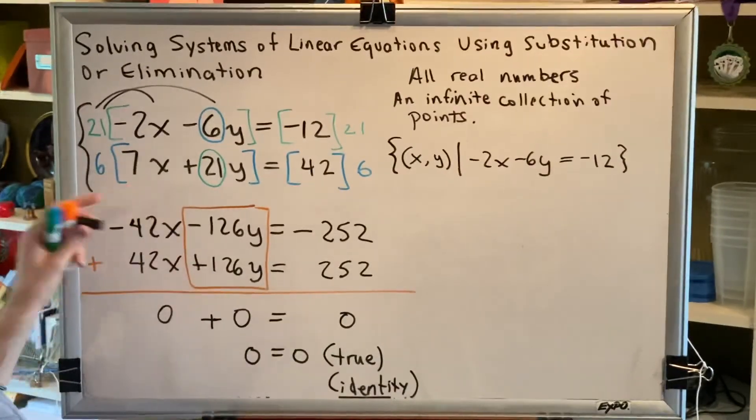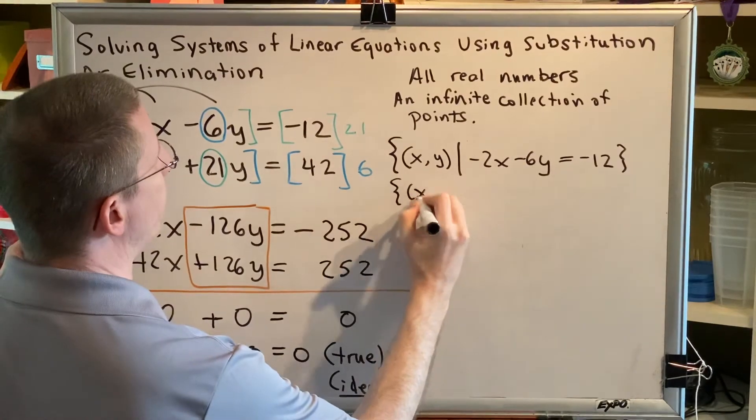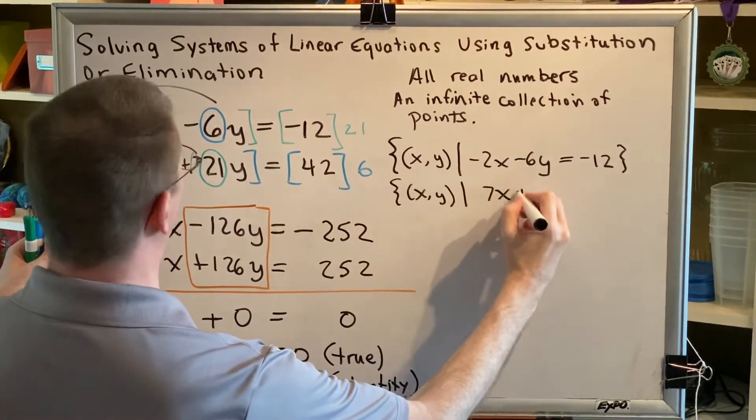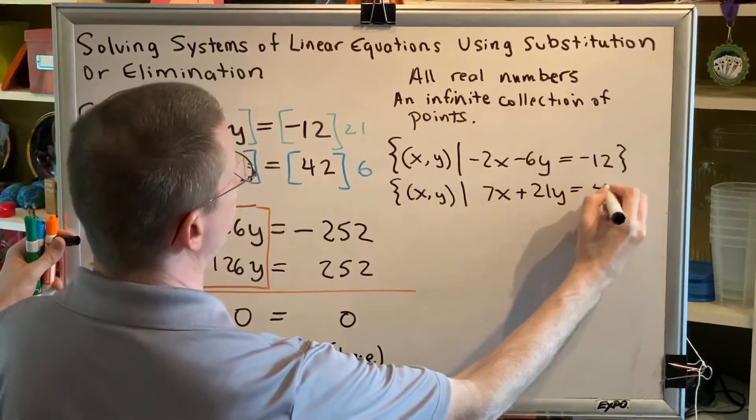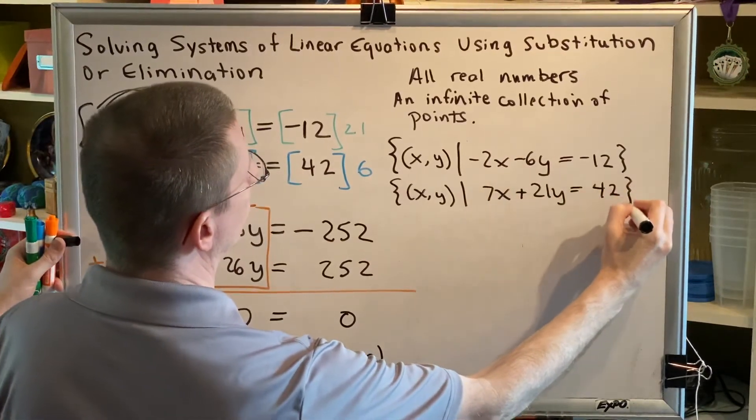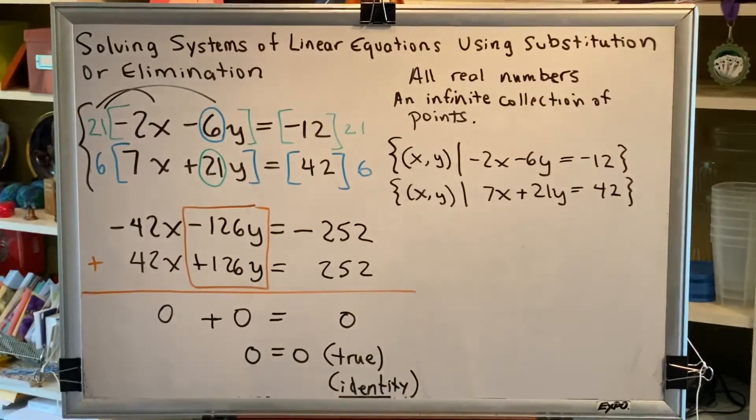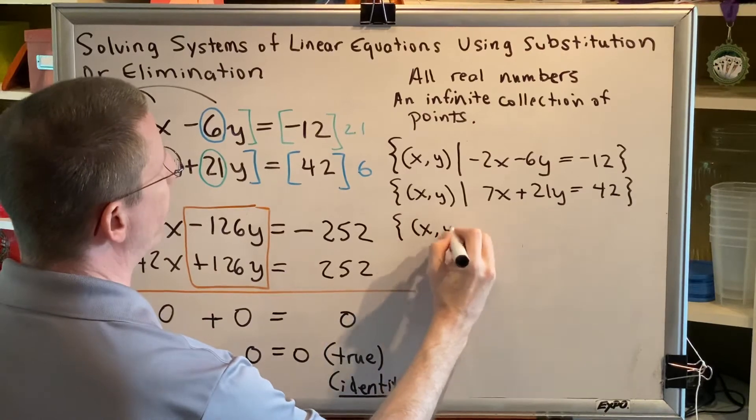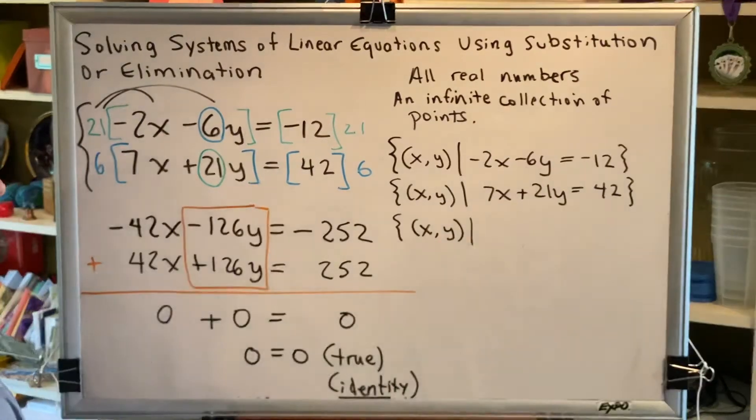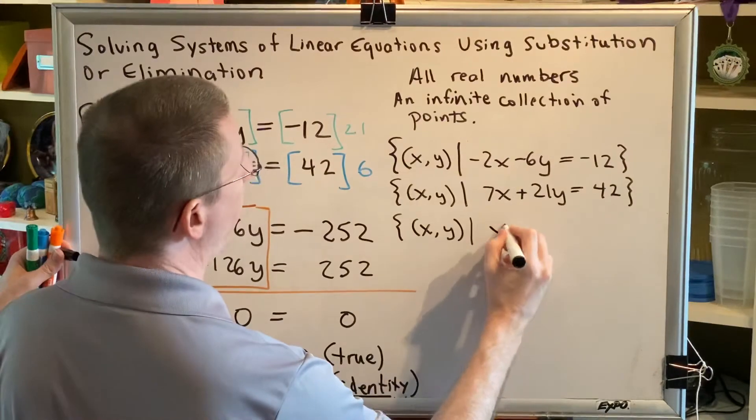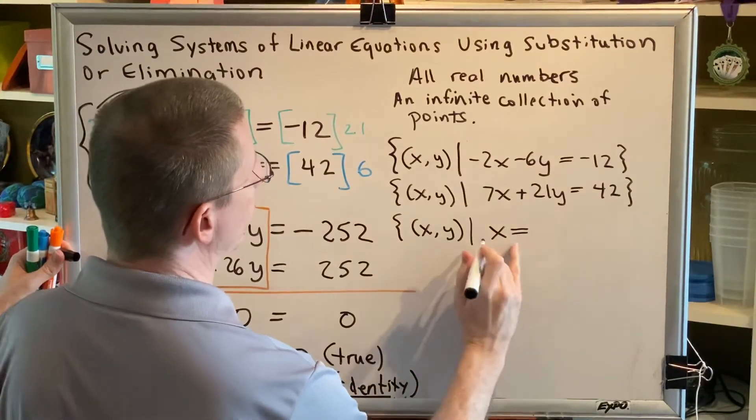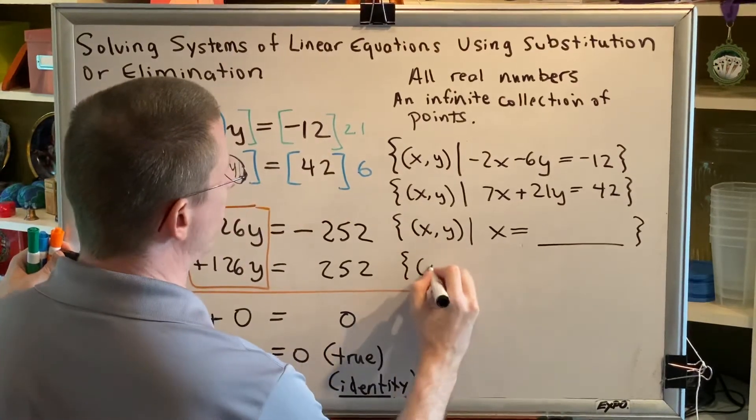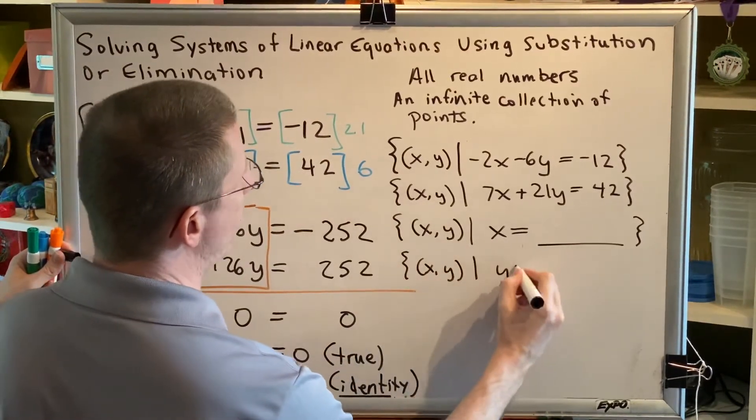The other would be to use the other equation. The set of all ordered pairs, x comma y, such that 7x plus 21y equals 42. Now maybe the software platform you're using to learn math this semester wants to have only one correct answer to the problem instead of multiple correct answers, in which case they may specify that the equation that you put inside your set has to start with x equals, or they may specify that it has to start with y equals.